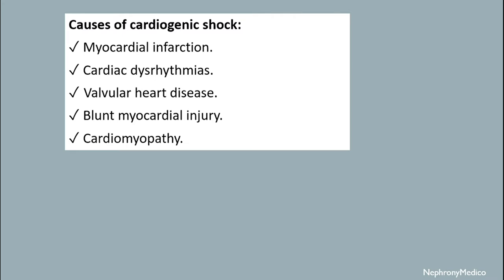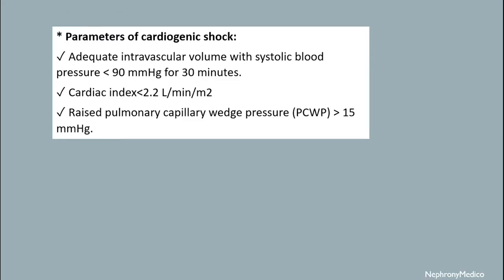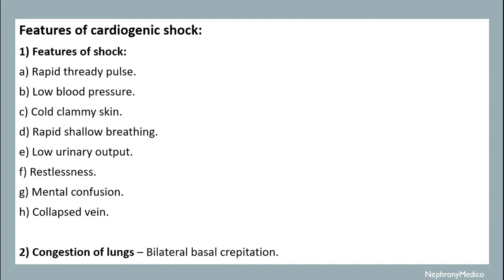Additional causes include myocardial injury and cardiomyopathy. The parameters of cardiogenic shock include adequate intravascular volume with systolic blood pressure less than 90 mmHg for 30 minutes, cardiac index less than 2.2, and raised pulmonary capillary wedge pressure more than 15 mmHg.